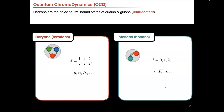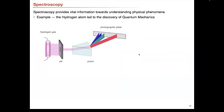The thing we want to understand — we have this general idea of what baryons and mesons are in terms of QCD — but what is it that we actually observe? We have to discuss spectroscopy, which is really trying to understand the content of some theory. In this case QCD — you want to understand it in terms of understanding its components. Just historically, spectroscopy provides useful information toward understanding various physical phenomena.